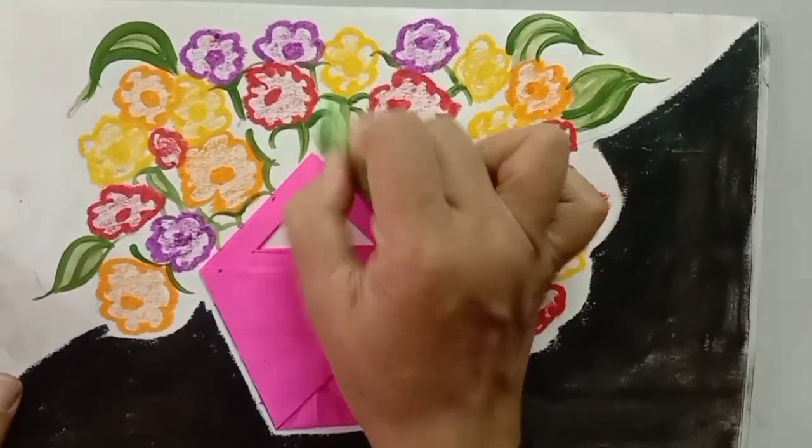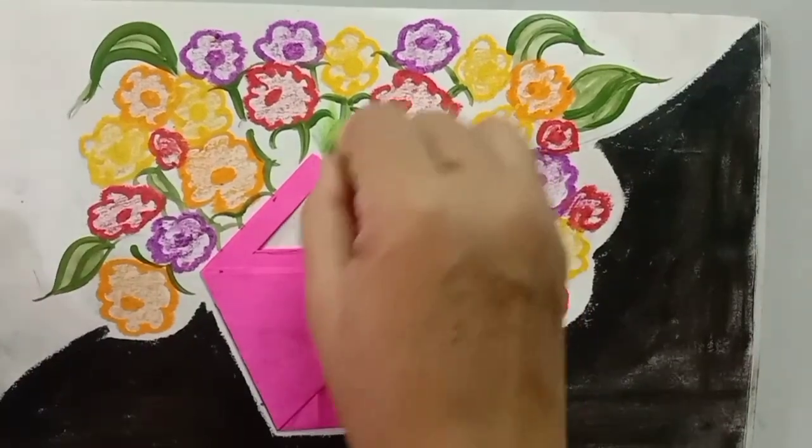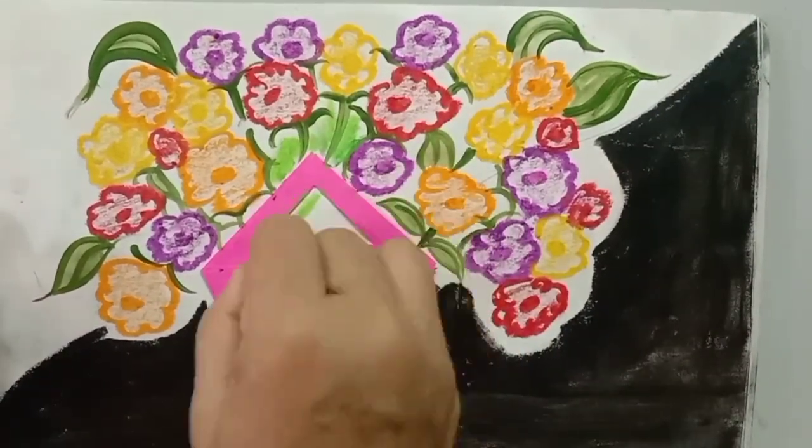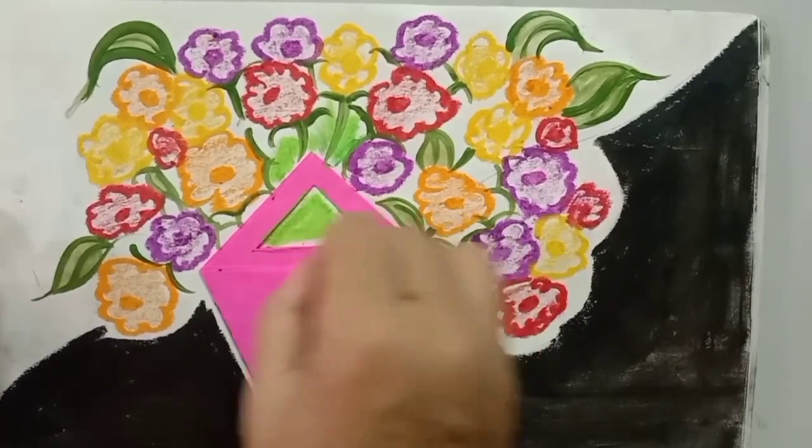Now here you can see, with dark green and light green color, you have to draw leaves.